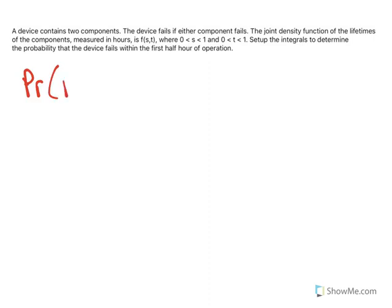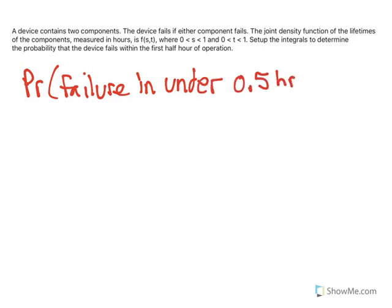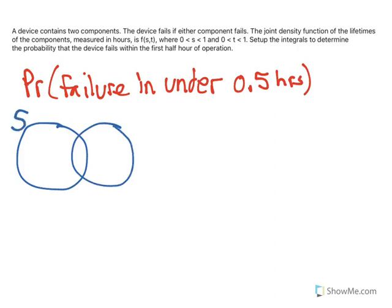So we're looking for the probability of failure in under 0.5 hours. Things are measured in hours. The way I like to think about joint density often is kind of like a Venn diagram. So I'm going to say the first device is device s, and the second device is device t.